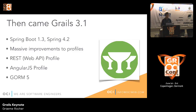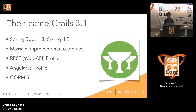After the big 3.0 release came Grails 3.1. Grails 3 was based on Spring Boot 1.2 and Spring 4.1, while Grails 3.1 is based on Spring Boot 1.3 and Spring 4.2. It's the first release where we really made the profile mechanism flexible — profiles in Grails 3.1 are just jar files, and you can create your own profiles.